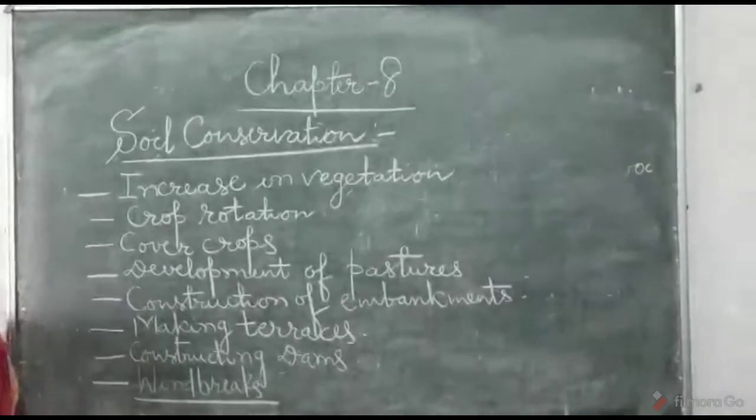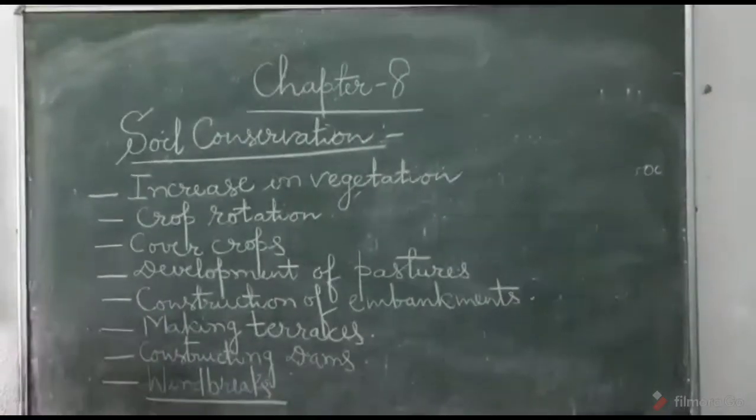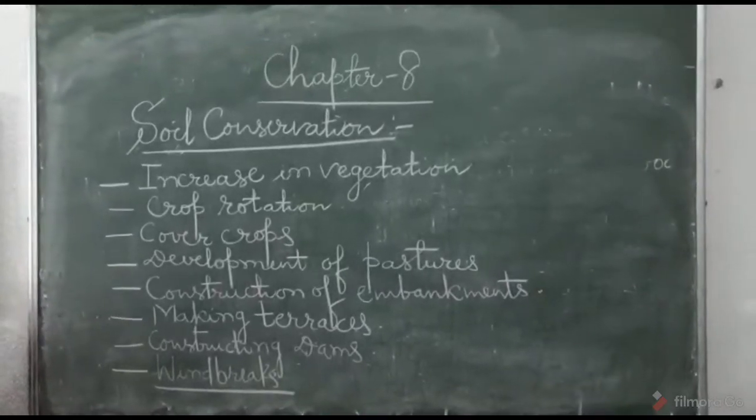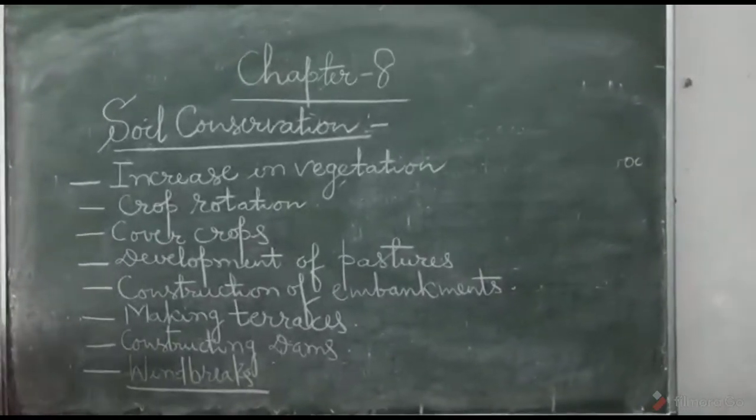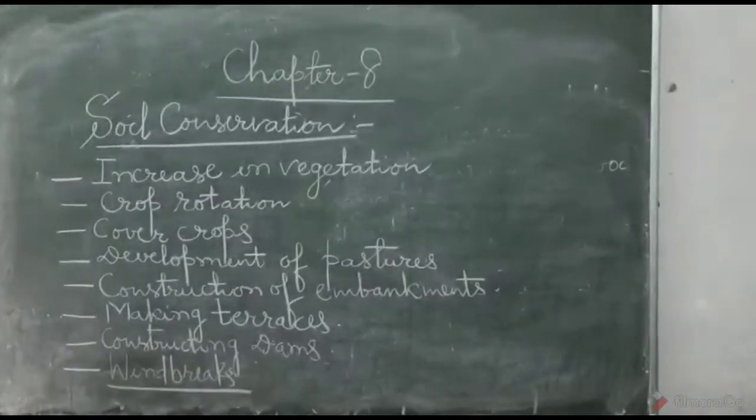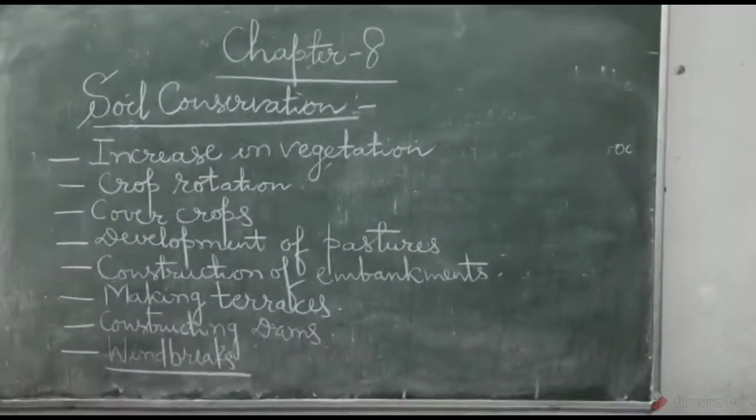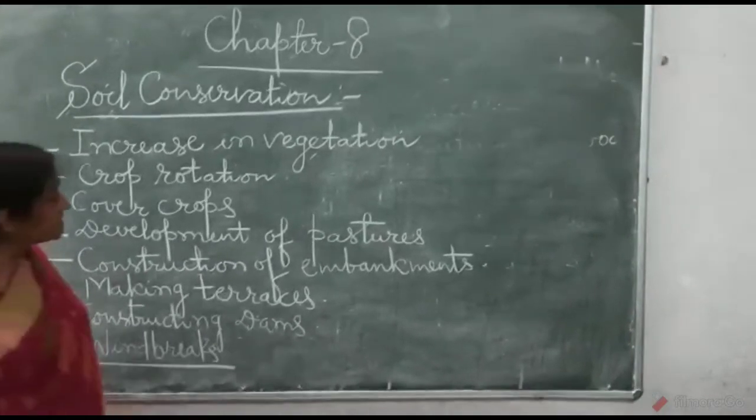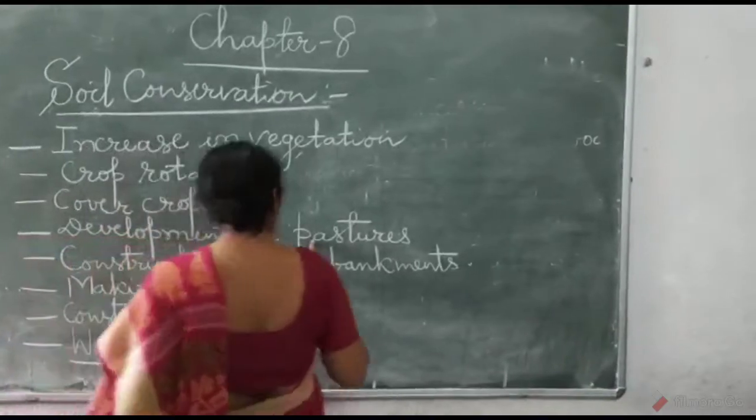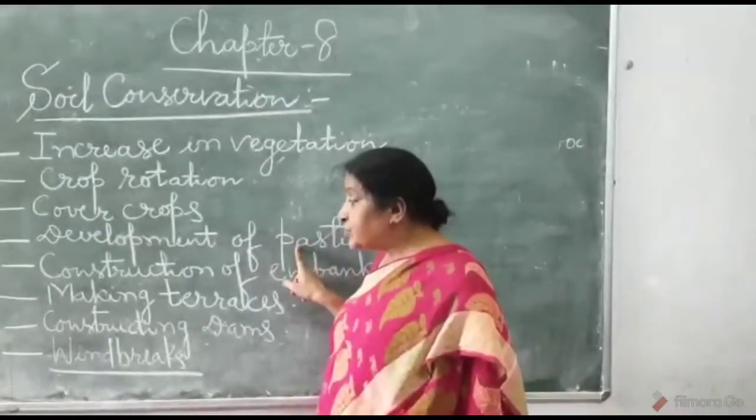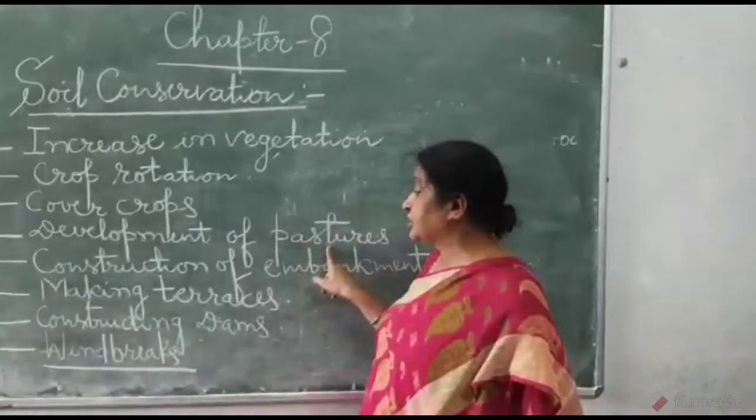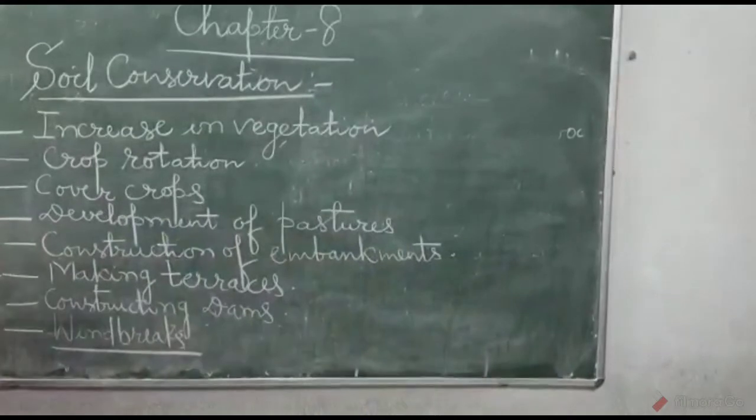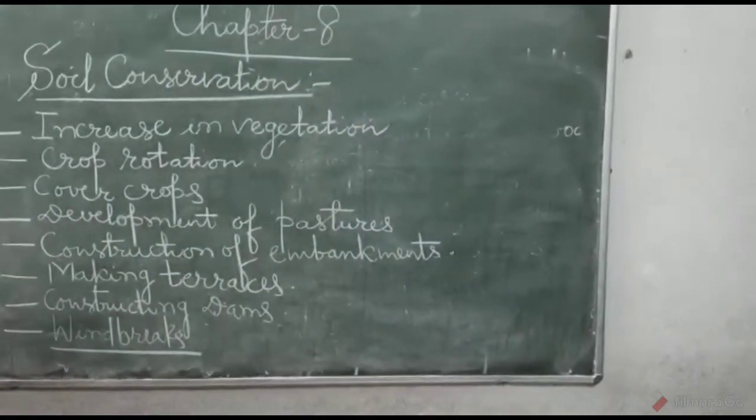The fourth is development of pastures. The grass and herbs do not get time to recover and grow due to overgrazing by cattle. This leads to soil erosion. To prevent such erosion we should reserve the place of pastures and develop pastures for the grazing of cattle. By that way we can prevent soil erosion.